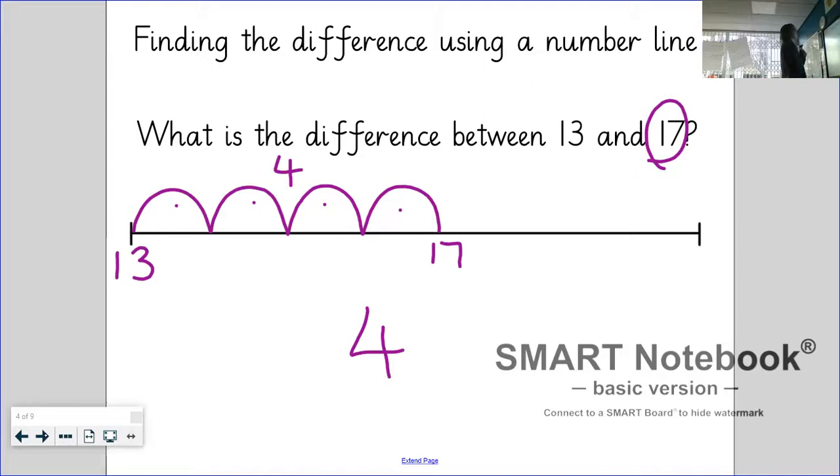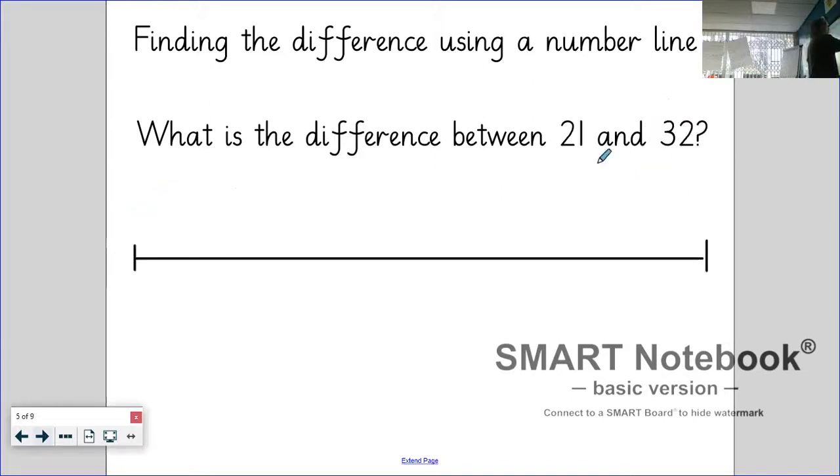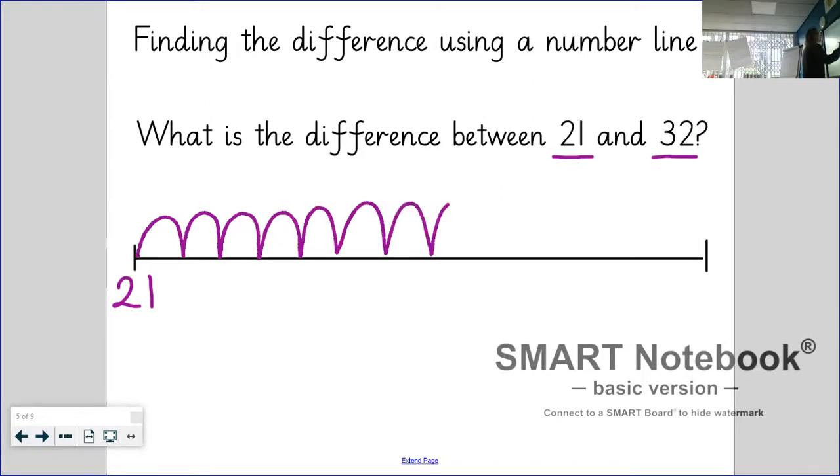Okay, the next one. What is the difference between 21 and 32? So I'm going to start here with 21. You can do this in your booklet as well. So 21, and I'm counting on from 21, and I'm stopping at 32. Remember 32 in your head. So I've got 21, 22, 23, 24, 25, 26, 27, 28, 29, 30, 31, 32. That's my 32. Let's count: 1, 2, 3, 4, 5, 6, 7, 8, 9, 10, and 11. So the difference between 21 and 32 is 11.